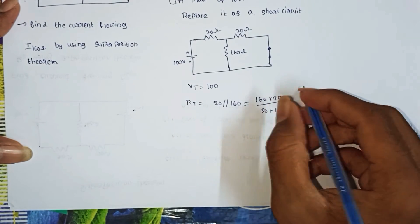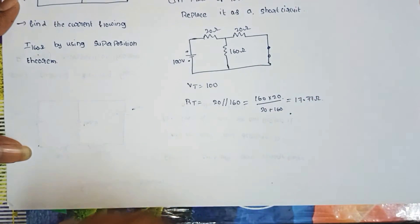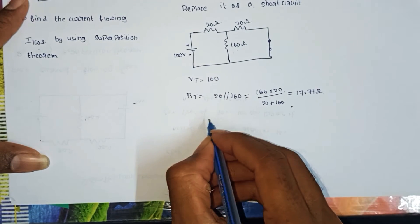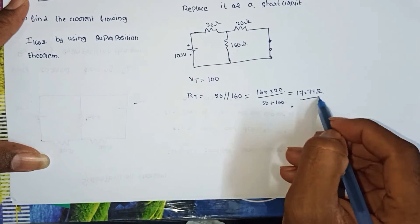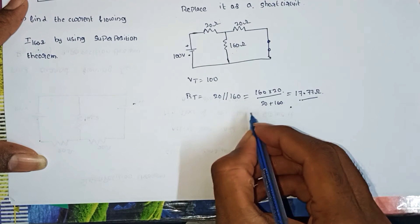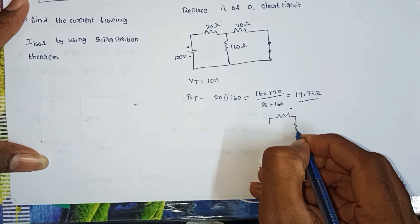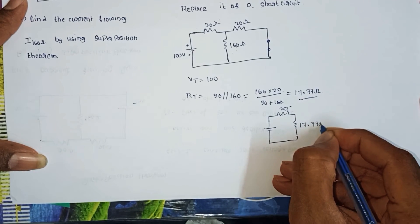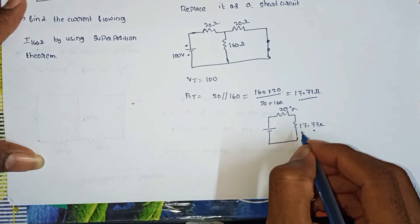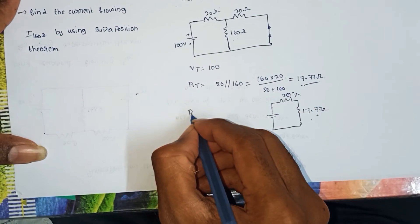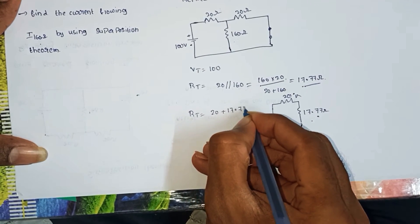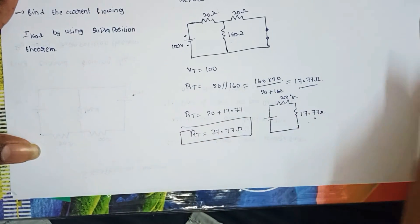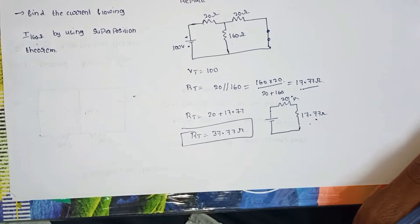If we calculate this: 20 into 160 by 180 equals 17.77 ohms. Now 17.77 is in series with the remaining 20 ohms. These two are in series with each other, so we add them: R total equals 20 plus 17.77, so R total equals 37.77 ohms.